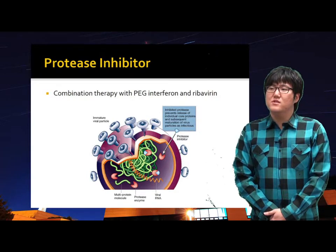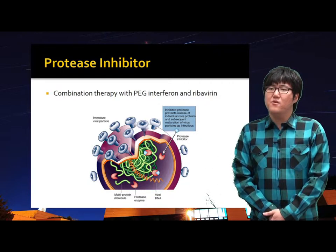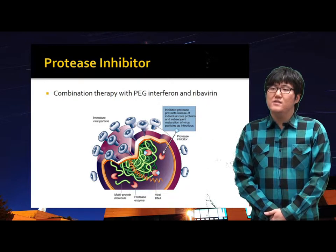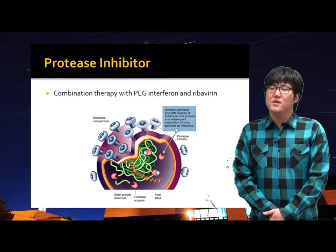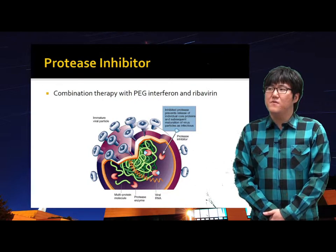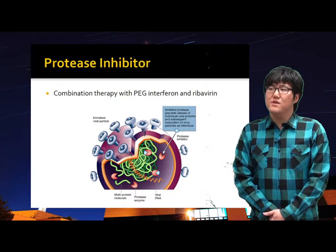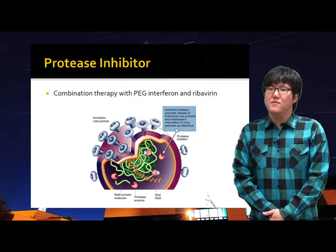Despite the improved results achieved with the addition of ribavirin to PEG interferon, the current available therapies for chronic HCV infection are effective only in some patients. A new class of direct-acting antiviral agents improved the effect of HCV treatment. Protease inhibitors target specific enzymes involved in viral replication, and their addition to PEG interferon and ribavirin is becoming the new standard for the treatment of chronic HCV infection.